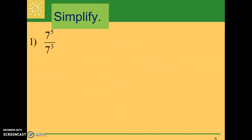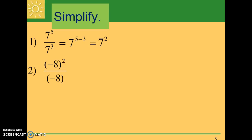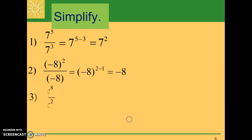Let's look at some examples. Number one: seven to the fifth divided by seven to the third. We take five minus three and we have seven to the second power. Number two: negative eight to the second power divided by negative eight. Every time we see a number with no exponent, it actually has an exponent of one. So that would be negative eight to the two minus one, which gives negative eight to the first power, which equals negative eight. Number three: x to the eighth divided by x to the second power. We subtract the exponents and we have x to the sixth power.